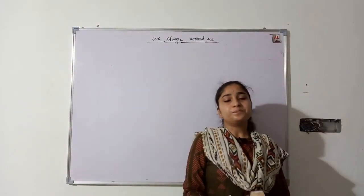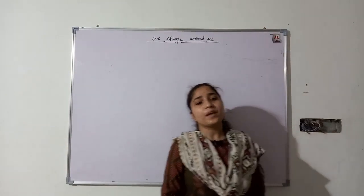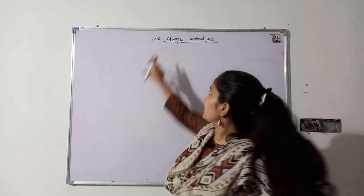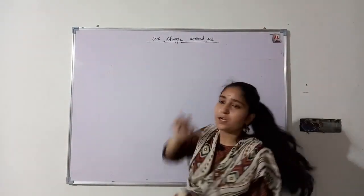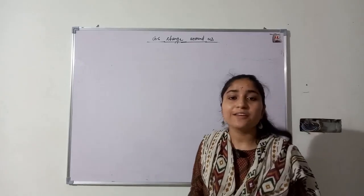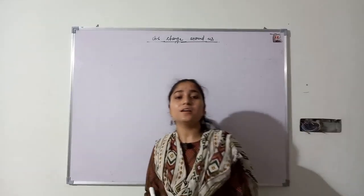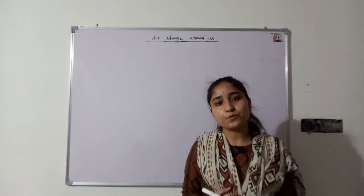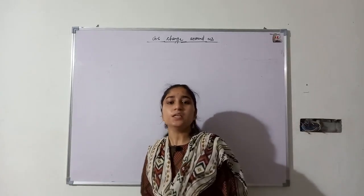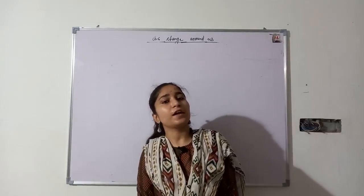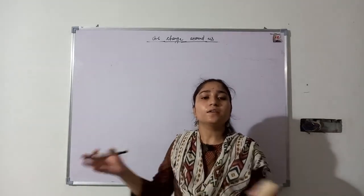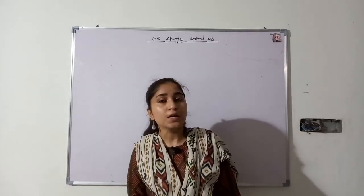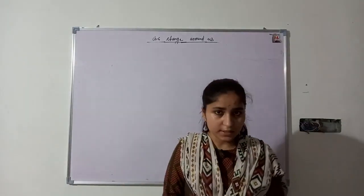Hello students, today I am going to start chapter number 6 — The Change Around Us. In our daily life we see so many changes, like ripening of fruits, flowering of plants, change in weather, or in our home like cooking of food. So these are all changes.